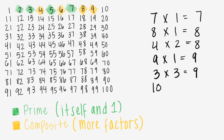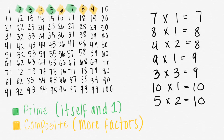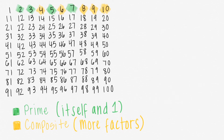10 times 1 equals 10, but 5 times 2 also equals 10. That means that 10 is composite. 11 times 1 equals 11, and there's no other possible way to get 11, so 11 is prime.